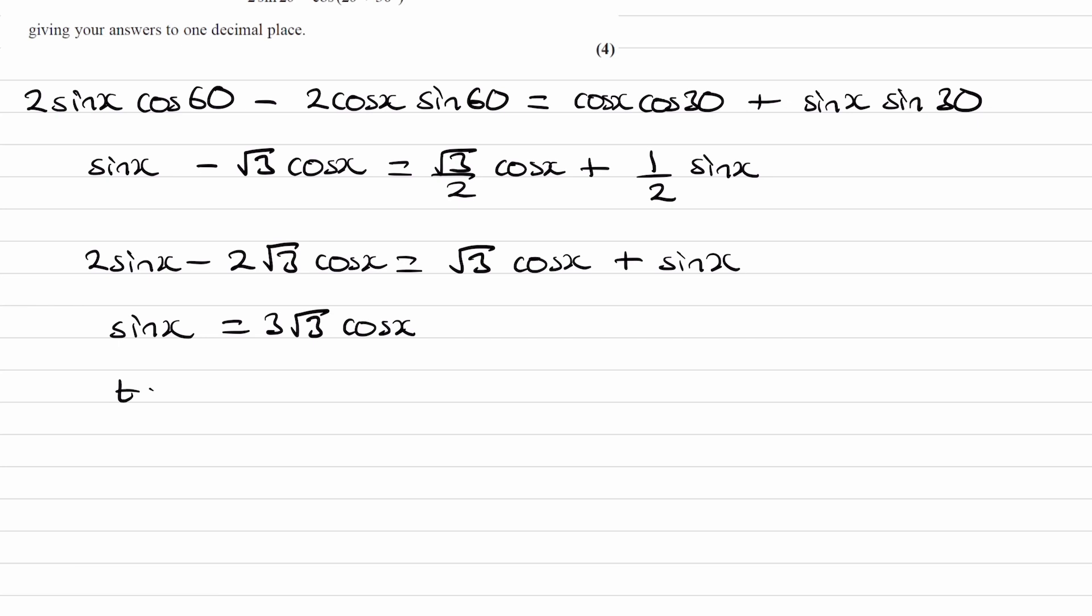Divide both sides by cos x. And we get what we're looking for. Tan x is equal to 3√3.